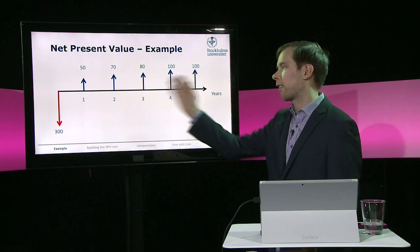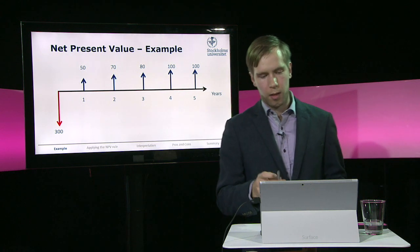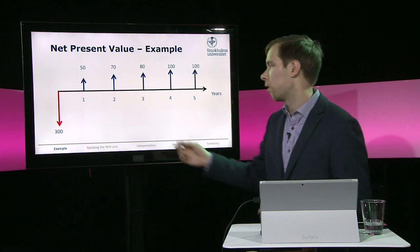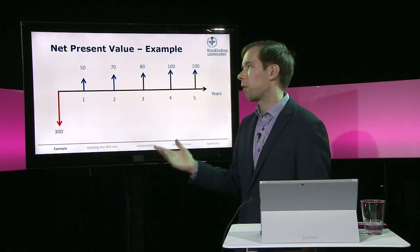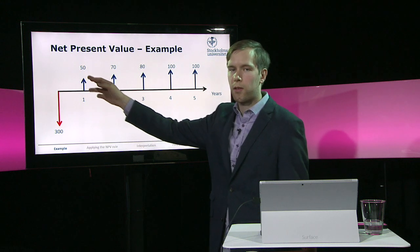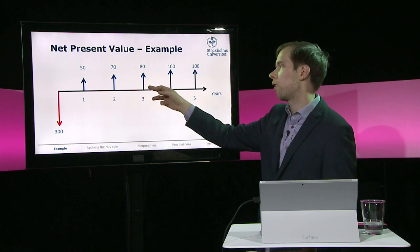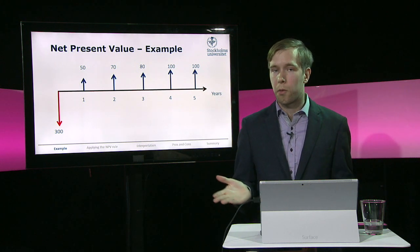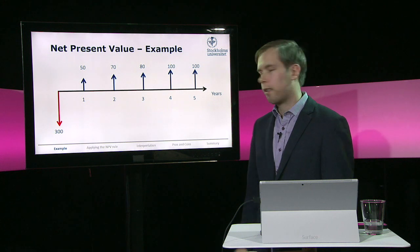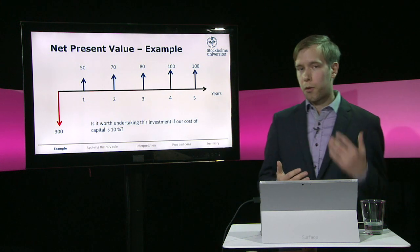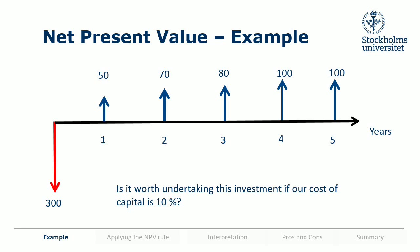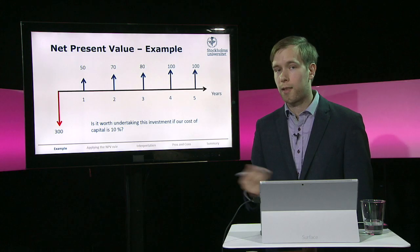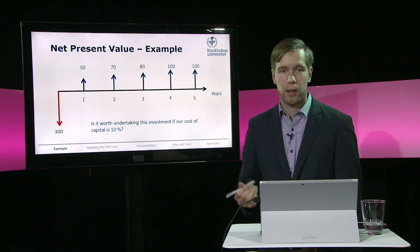So basically this is a timeline that you've seen before, but we can think of it as buying a machine. We pay 300 today and then we expect this machine to generate extra revenue of 50 in the first year, 70 in the second year, 80 in the third year, and 100 in the fourth and fifth year, after which we expect no more use of it. The question is: is it worth doing this investment — worth paying 300 million — if our cost of capital is 10 percent?